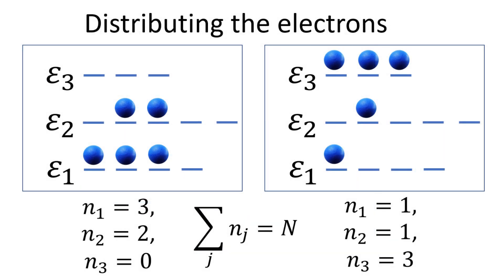On the left, we can have more electrons populating the lower energy levels, with n1 equals 3, n2 equals 2 and n3 equals 0. On the right, we have more electrons populating the higher energy levels, with n1 equals 1, n2 equals 1 and n3 equals 3.